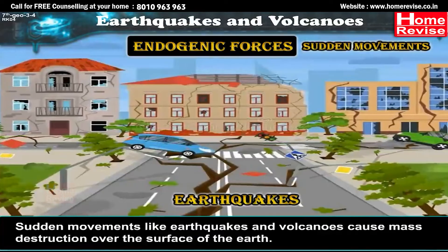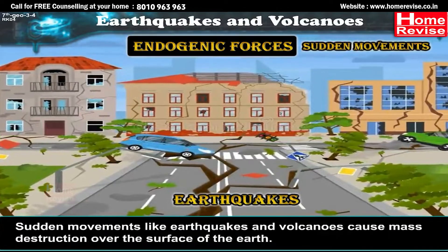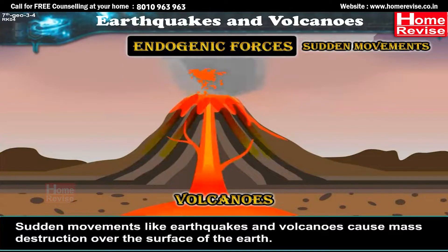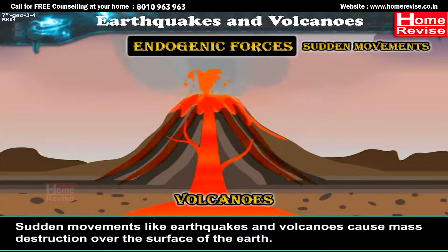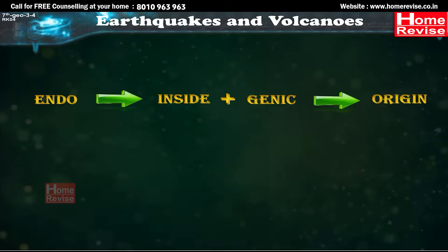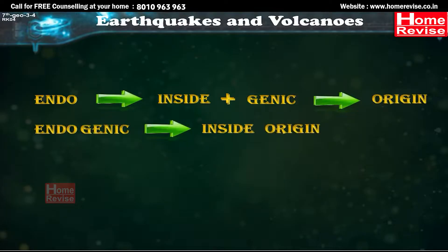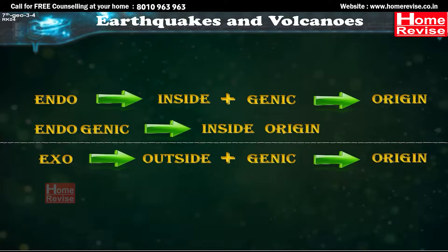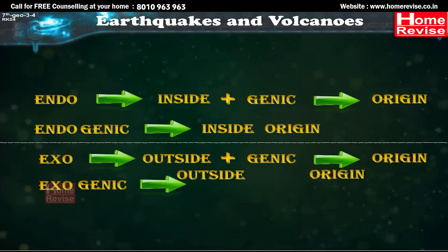Sudden movements like earthquakes and volcanoes cause mass destruction over the surface of the Earth. 'Endo' means inside and 'genic' means origin, so endogenic together means inside origin. 'Exo' means outside and 'genic' means origin, so exogenic means outside origin.